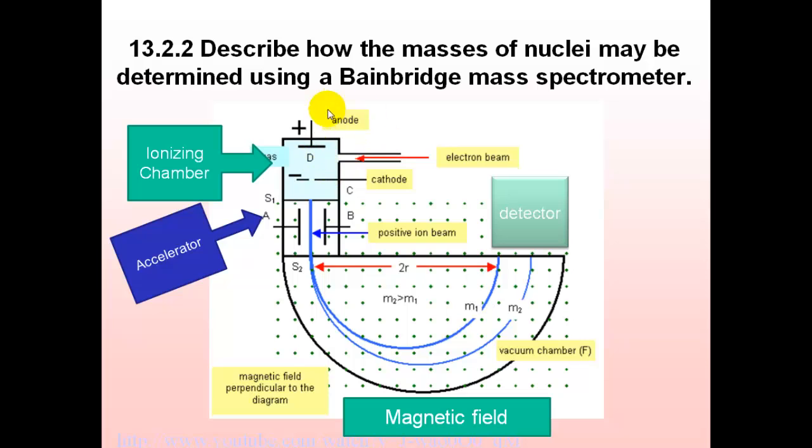So we have an ionizing chamber, an accelerator. It gets collimated there which means stretched into a straight line, and it gets curved by the magnetic field and then there's the detector.